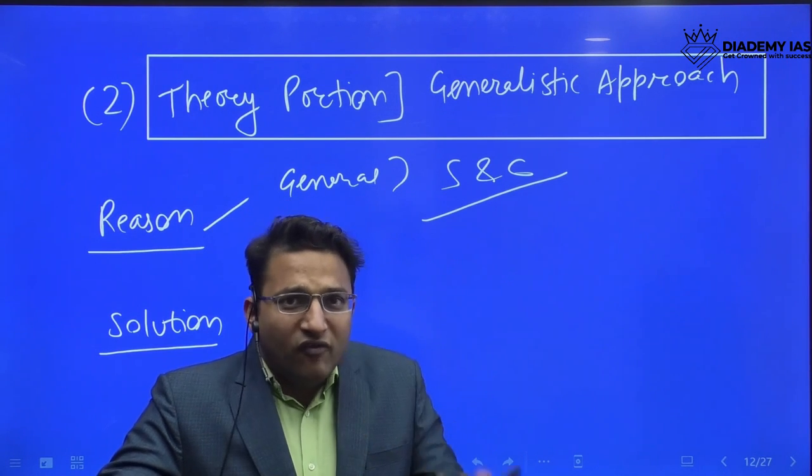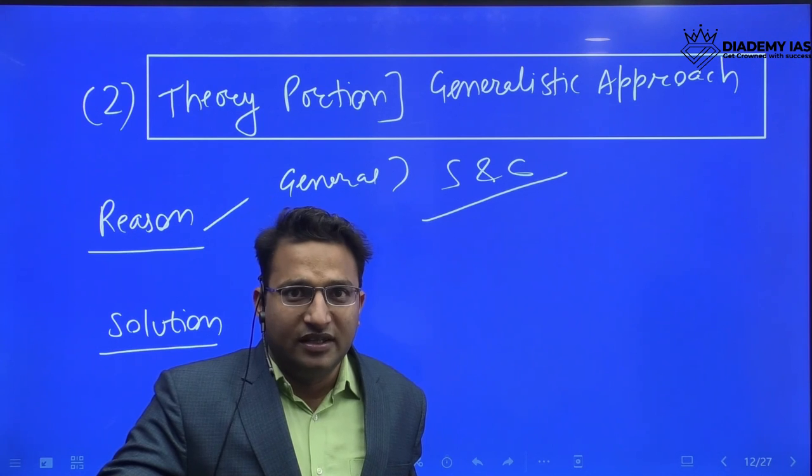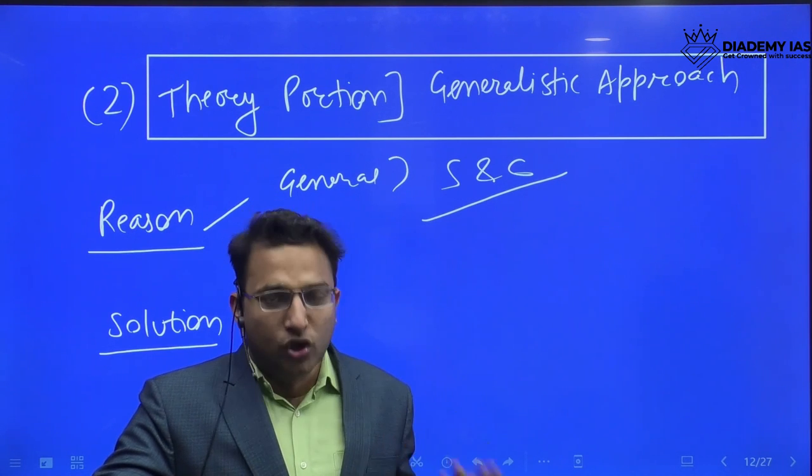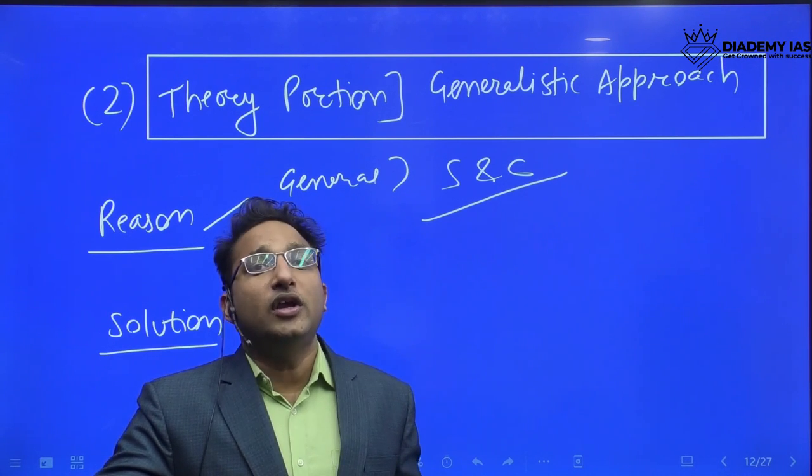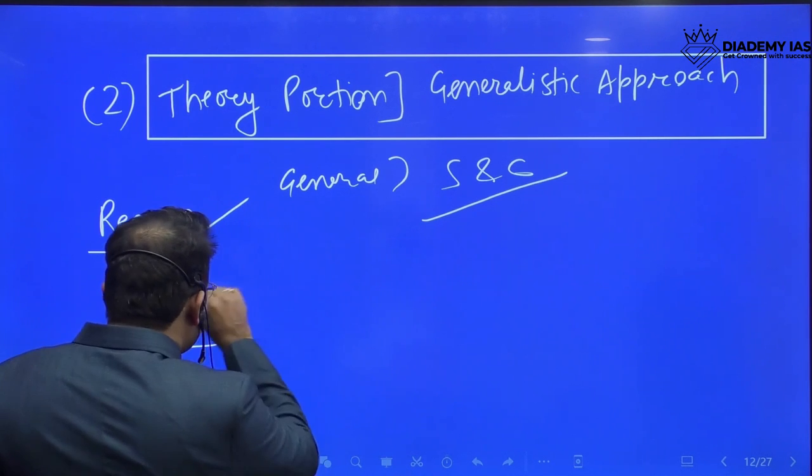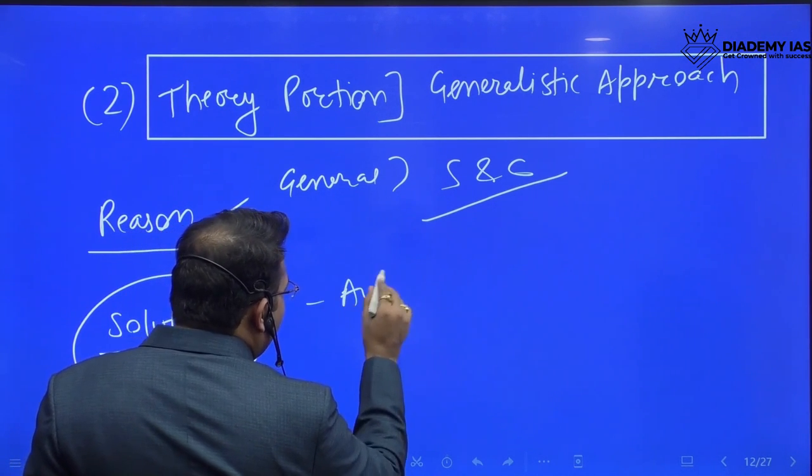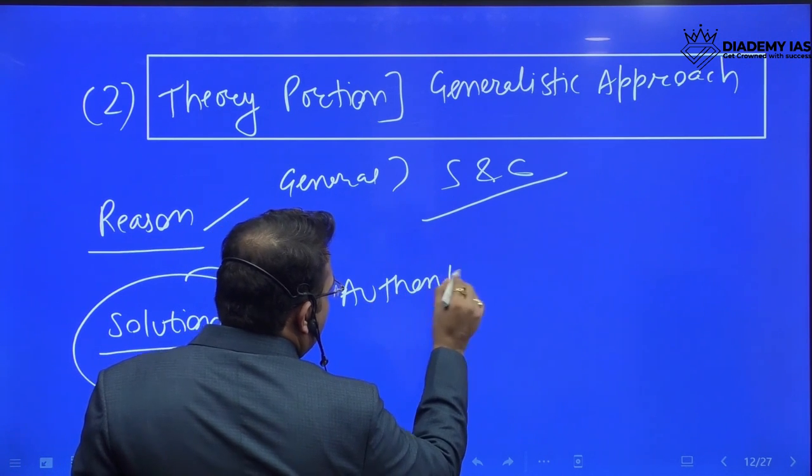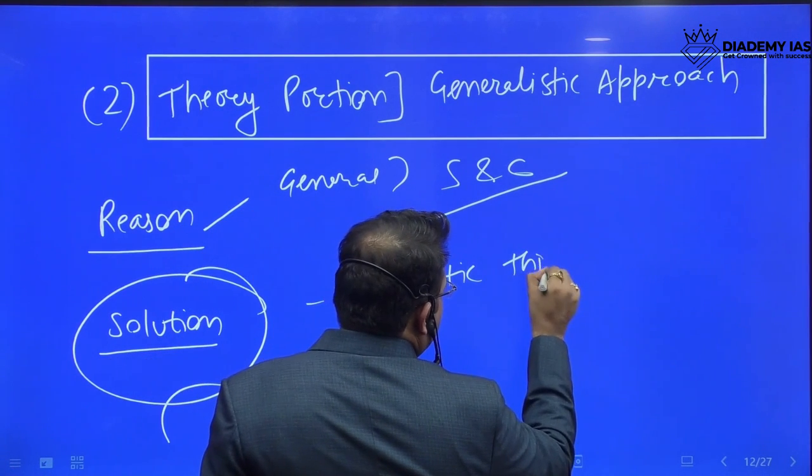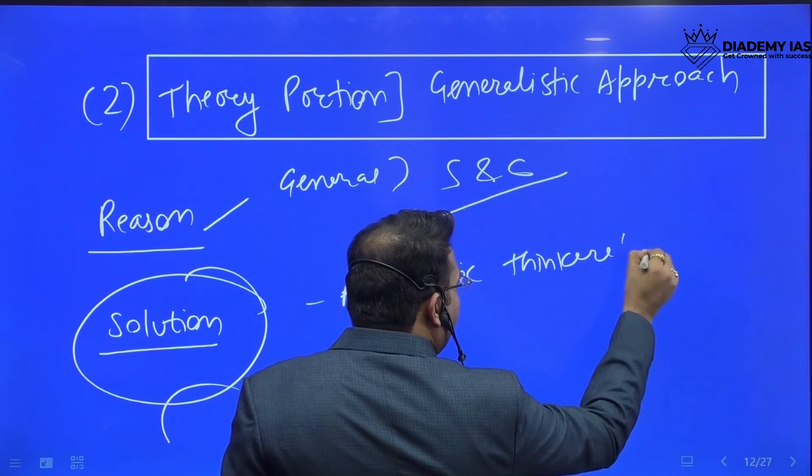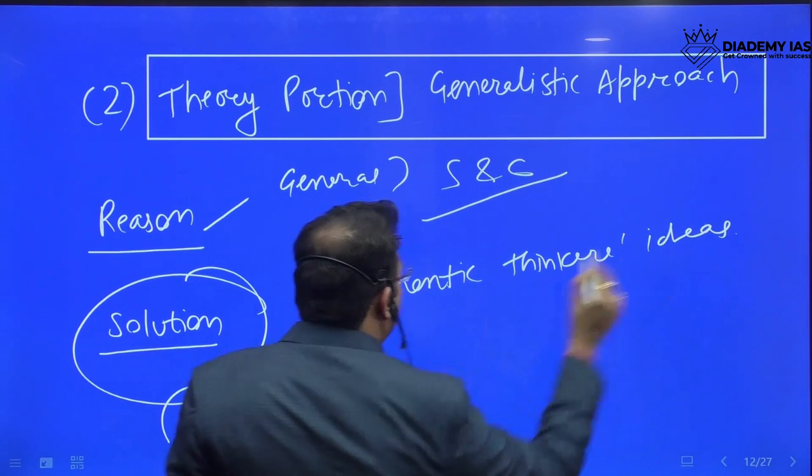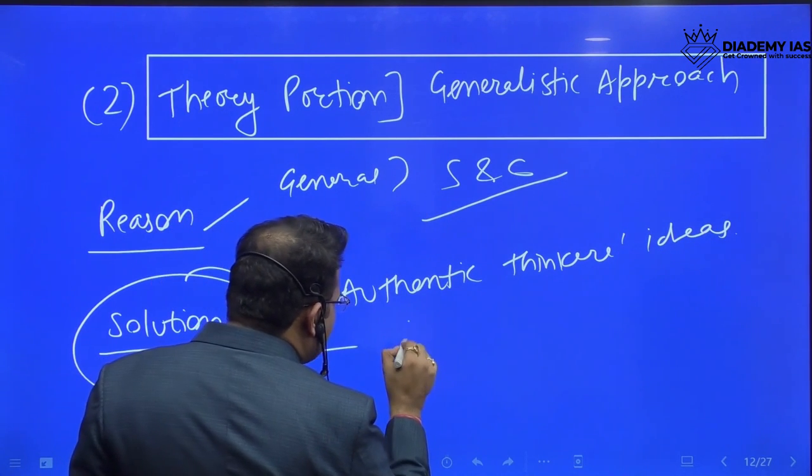But now a lot of content is coming which is available in the public domain, in good books. You need to have some specific content. The solution is you have to bring some good authentic thinkers' ideas for the same topic which they're asking in the optional. You have to bring some new diagrams.